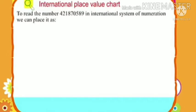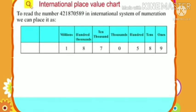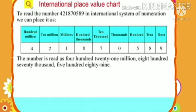For example, the number 4,21,870,589 in the international system of numeration is placed as: nine ones, eight tens, five hundreds, zero thousands, seven ten-thousands, eight hundred-thousands, one million, two ten-millions, four hundred-millions. The number is read as: four hundred twenty-one million, eight hundred seventy thousand, five hundred eighty-nine.